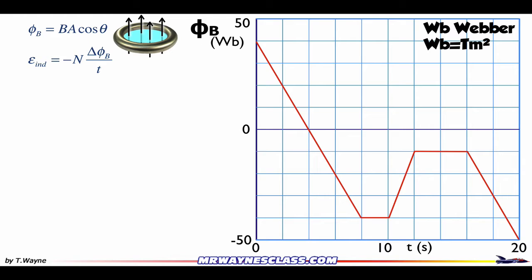N is the number of rings. If you have just one ring, it's one; if you have a thousand rings, it's a thousand. The negative sign comes from Lenz's Law, because Lenz's Law says that when you try to change the flux, there's motion to counter that change — that's where the negative comes from.